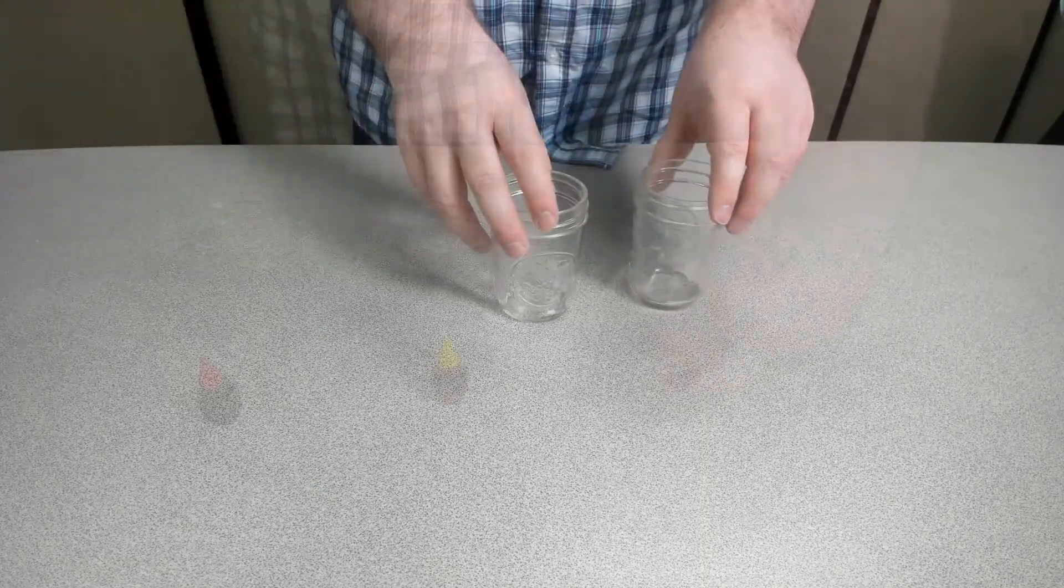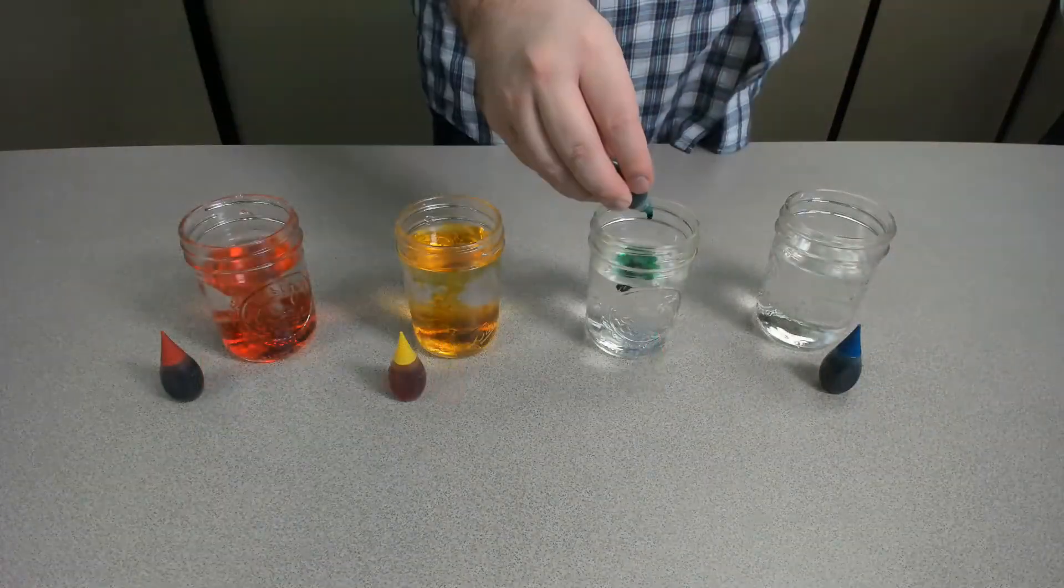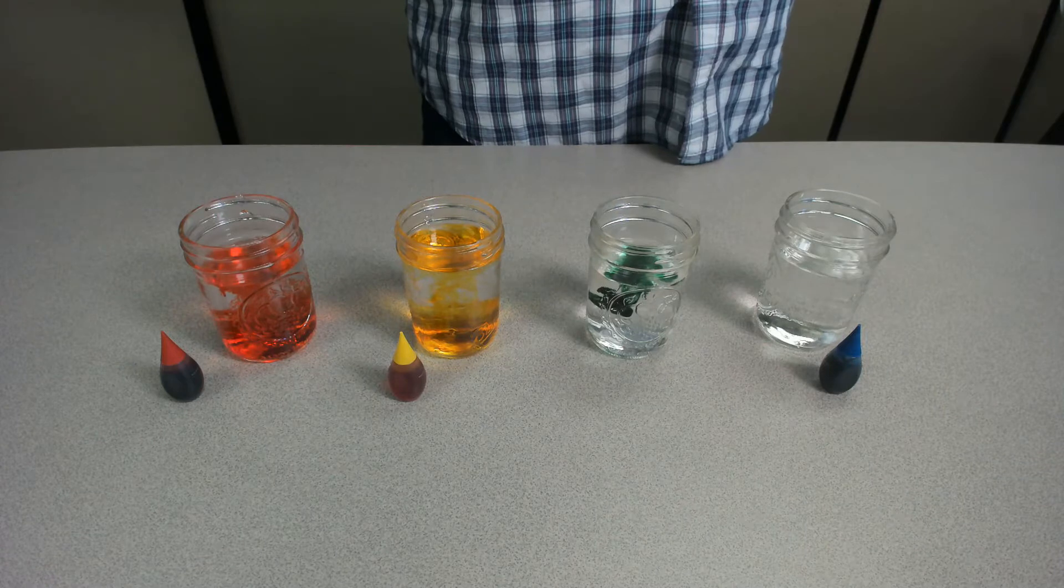For our next craft, we are continuing to make use of capillary action to create rainbow bridges. Here you will need several glasses along with an assortment of liquid food dye as we will be dyeing the water we are pouring into these glasses to create a rainbow of colors our bridges will be running between.